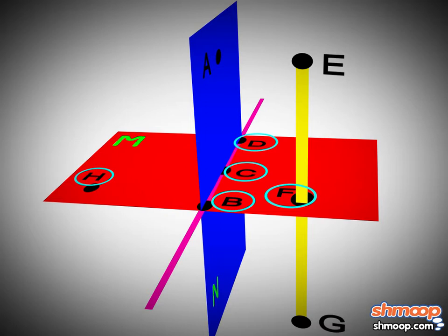because they're all contained within the boundaries of M. That means that the rest of the points, highlighted here for your viewing pleasure, A, E, and G, are not on plane M.